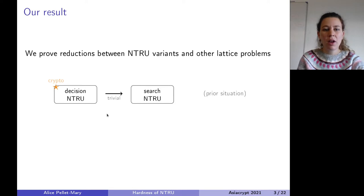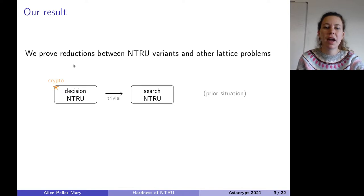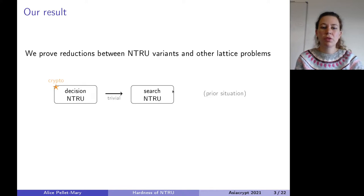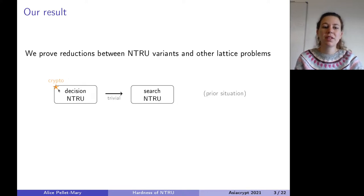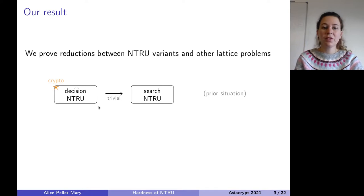In this picture, an arrow means a reduction. This was the state of the art before our article: you can reduce decisional NTRU to search NTRU, meaning that if you can solve search NTRU, then you can solve decisional NTRU.